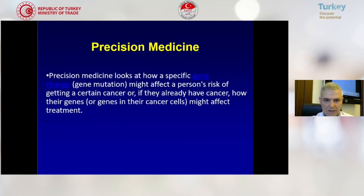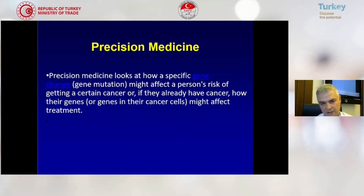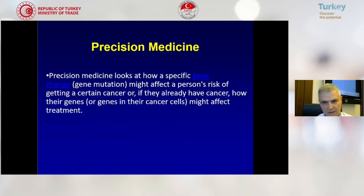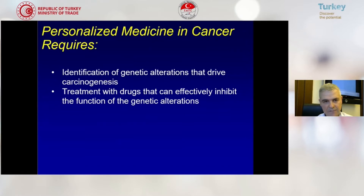Precision medicine looks at how a specific gene change or gene mutation might affect a person's risk of getting a certain cancer, or if they already have cancer, how their genes or genes in their cancer cells might affect treatments.